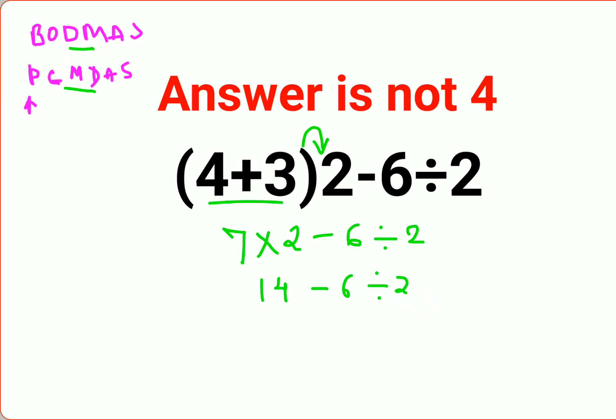Now here this is where a lot of people made a mistake. They thought that we'll do 14 minus 6, that gets you 8, 8 divide by 2, you get the answer as 4. This is wrong.